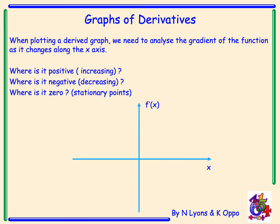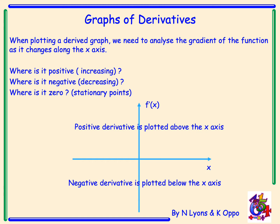What does that mean? A positive derivative is plotted above the x-axis — it has a positive value. A negative derivative, a negative gradient, is plotted below the x-axis in the negative area. Stationary points become roots of the derived graph.